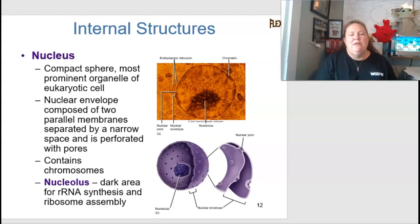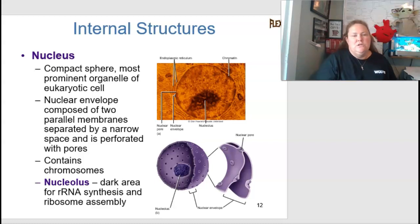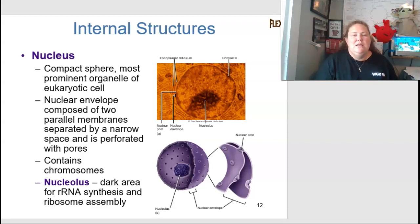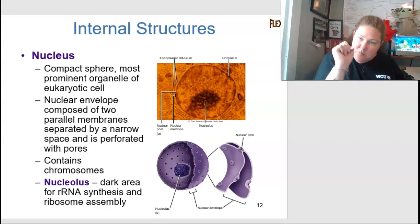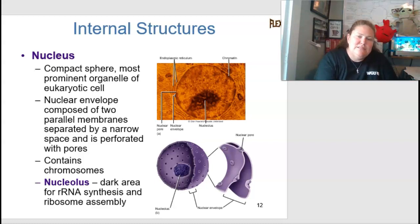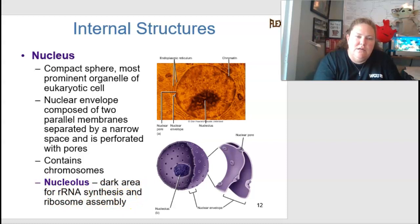Eukaryotic cells can contain membrane-bound organelles that account for 60 to 80 percent of their volume. We'll spend a lot of time on the nucleus — this is where all of our cellular DNA is. The nucleus is a compact sphere and is the most prominent organelle in a eukaryotic cell. The nuclear envelope is composed of two parallel membranes separated by a narrow space, perforated with pores, and contains chromosomes. The nucleolus is a small area inside the nucleus where rRNA is made and ribosomes are assembled.